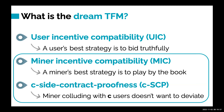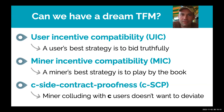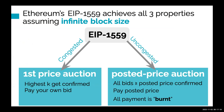MIC and C-SCP are new requirements arising in the decentralized environment. In earlier work by Tim Roughgarden, he raised a very important question: can we have a dream transaction mechanism? Interestingly, all previously proposed mechanisms fall short of satisfying all properties — none of them are dream. The closest we have come to satisfying all properties is Ethereum's EIP-1559, which was deployed in August of last year.